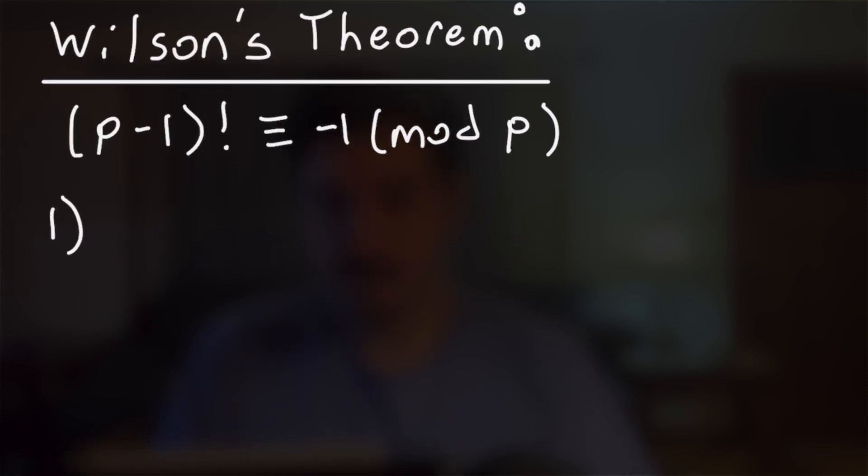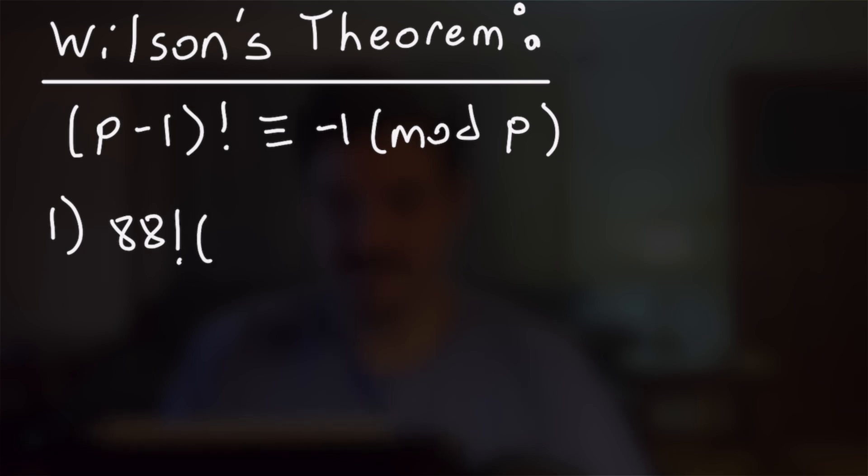So starting off with number one, we can see that's going to be a direct application of Wilson's theorem as we have the setup that we want here. We have 88 factorial, and we're trying to reduce that mod 89. So by Wilson's theorem, we can directly apply it and we'll get -1 mod 89, which is of course equal to 88.